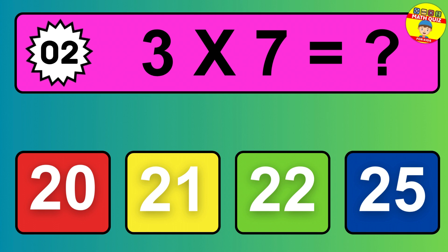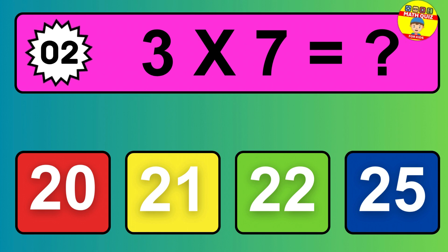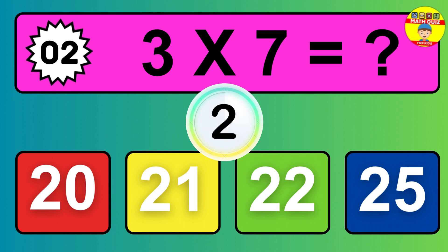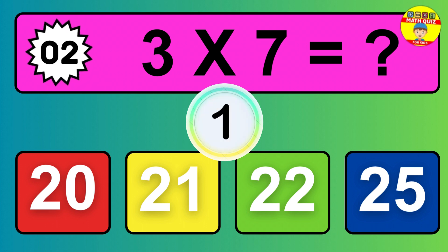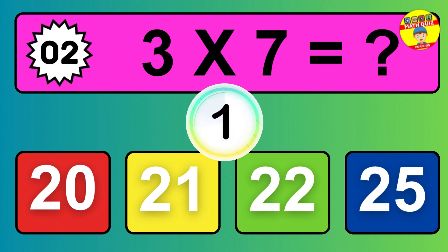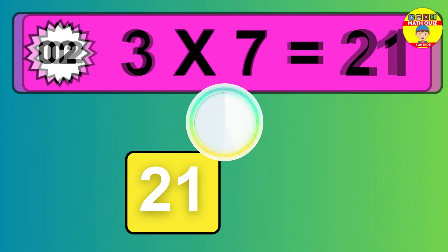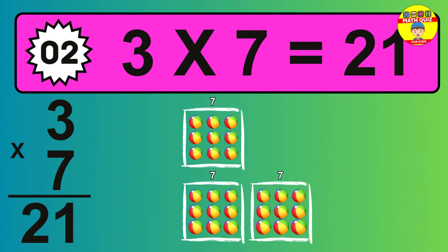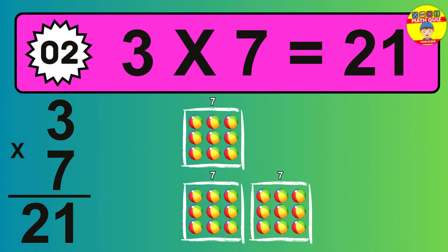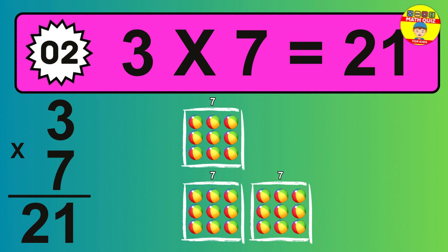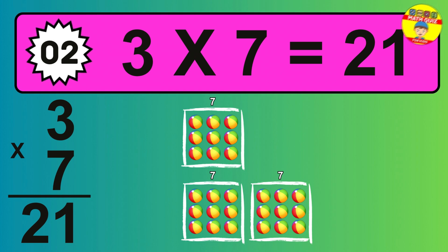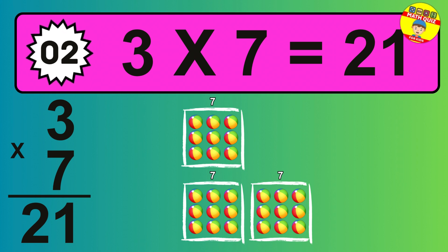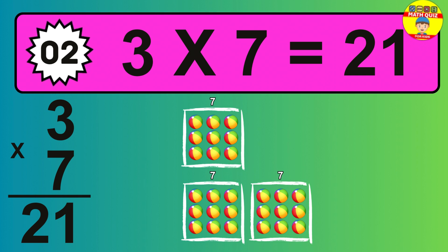Question 2. 3 times 7 equals what? The answer is 3 times 7 is 21. To calculate, we have 3 groups with 7 balls each one. So how many balls do we have? 21 balls.